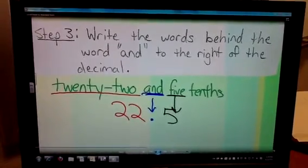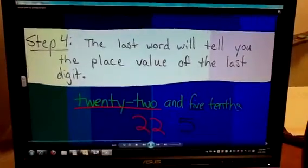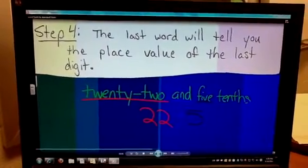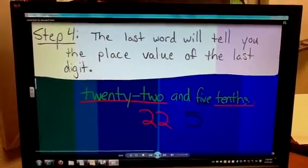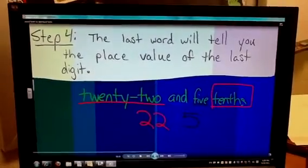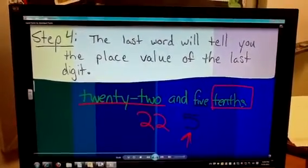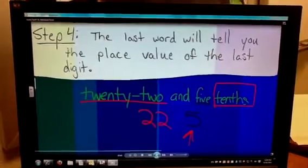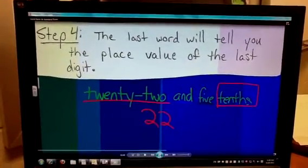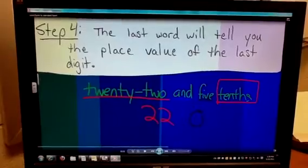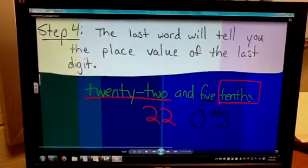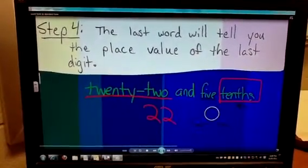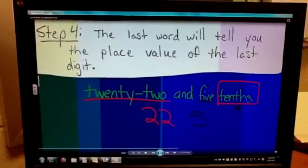Moving on, step number four says the last word will tell you the place value of that last digit. So when I look at my last word, tenths, I know that my place value of the last digit should be in the tenths place. If this were five hundredths, then I would have to erase my five and fill the tenths place with a zero and place a five in the hundredths place. But fortunately, with this example, we have five tenths, so I will write it back as it was.